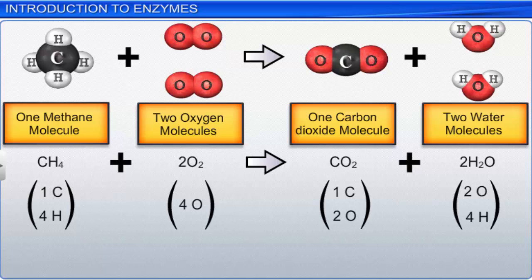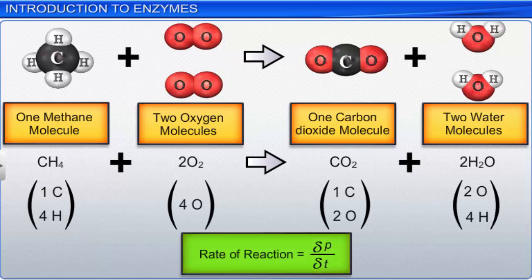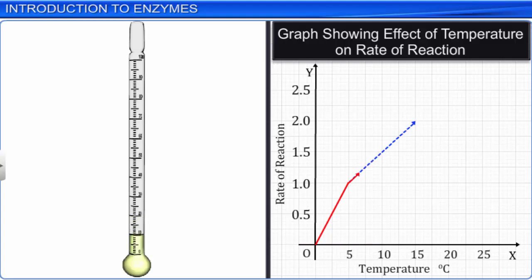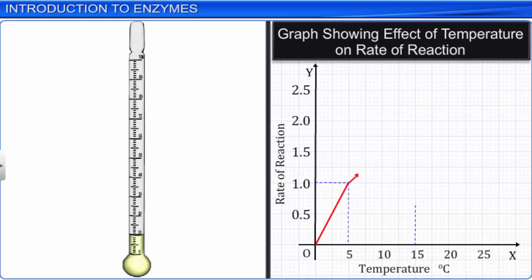The rate of a reaction is defined as the amount of a product formed per unit time, expressed as delta P upon delta T. Various factors such as temperature and pressure influence the rate of reaction. This rate generally doubles or decreases by half for every 10 degree change in temperature in either direction. For example, a reaction taking place at 5 degrees with a rate of 1 unit will double to 2 units when the temperature is increased by 10 degrees, and become half when decreased by 10 degrees.